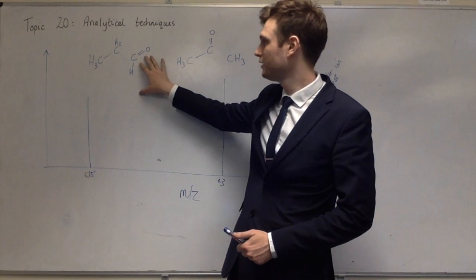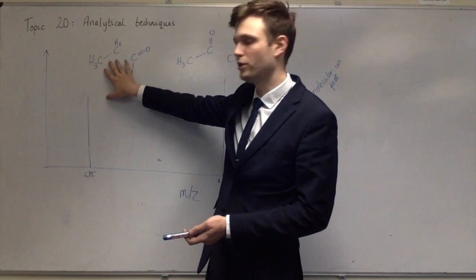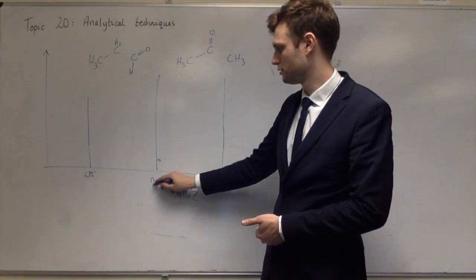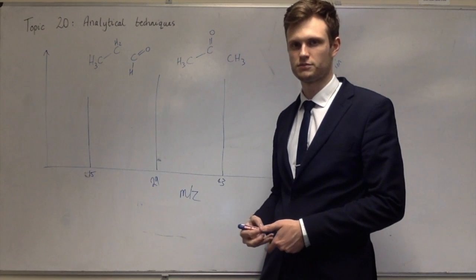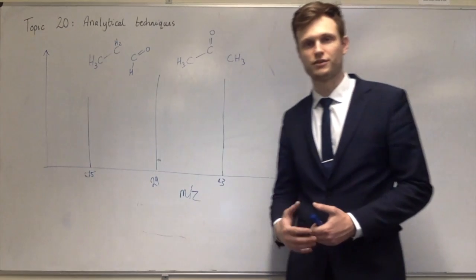So, if you break it here, then it was a group that weighs 29. And a group that weighs 29. So they both weigh 29. So with propanal, you'd end up with a big peak at 29. Whereas you wouldn't get that when splitting apart propanone.